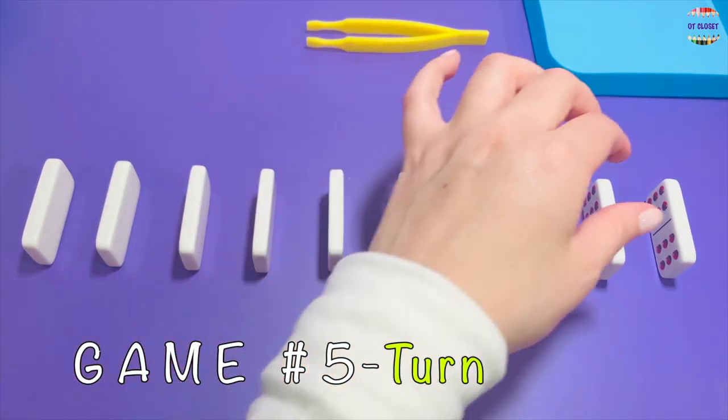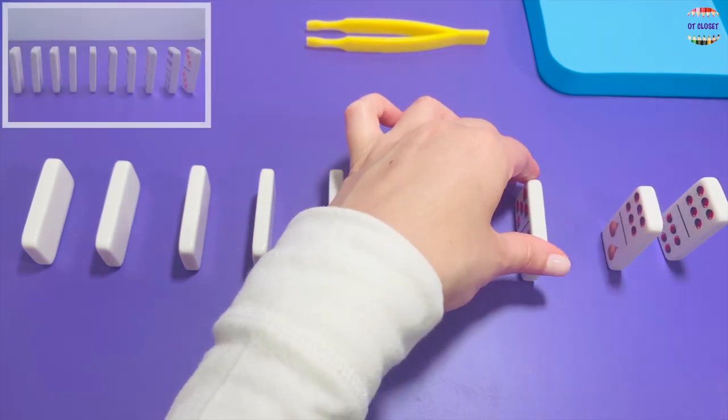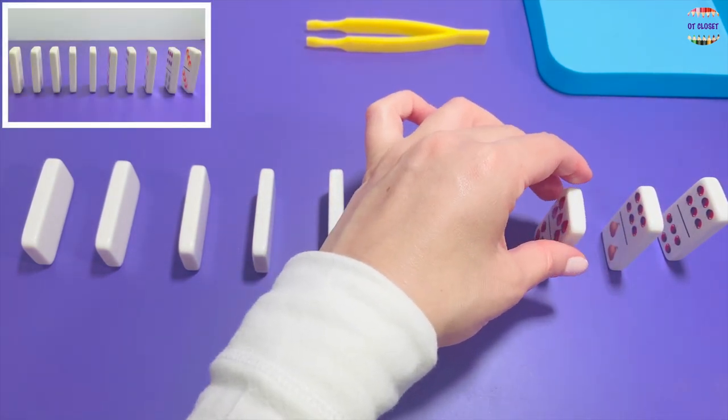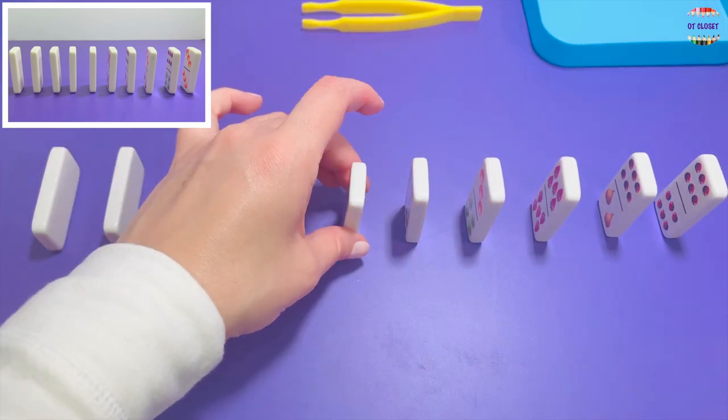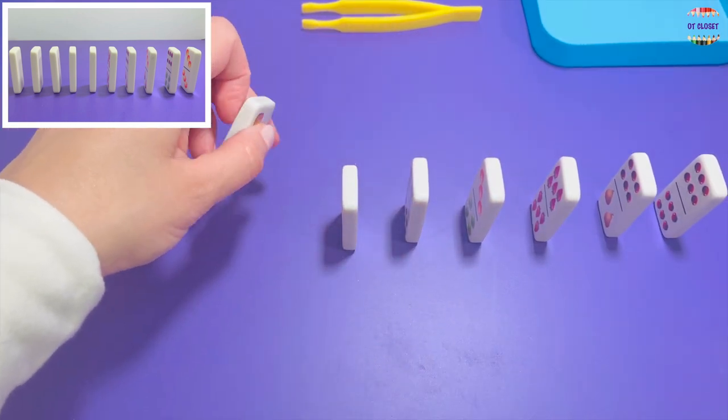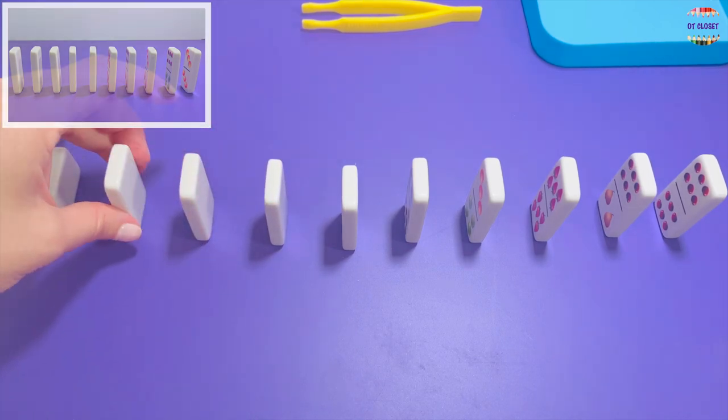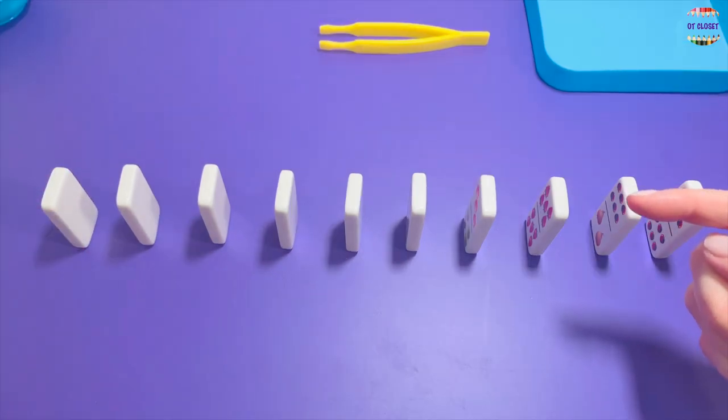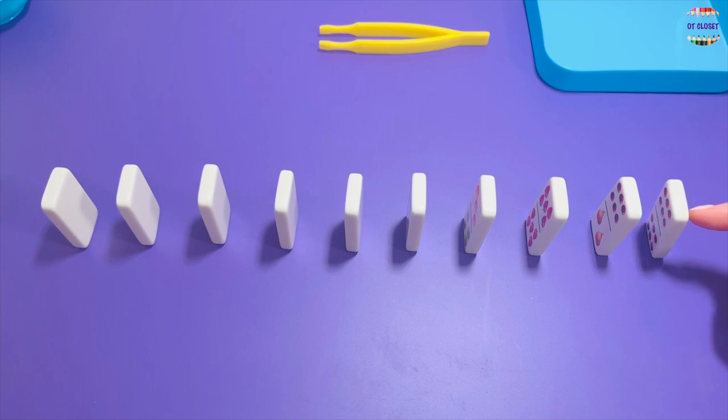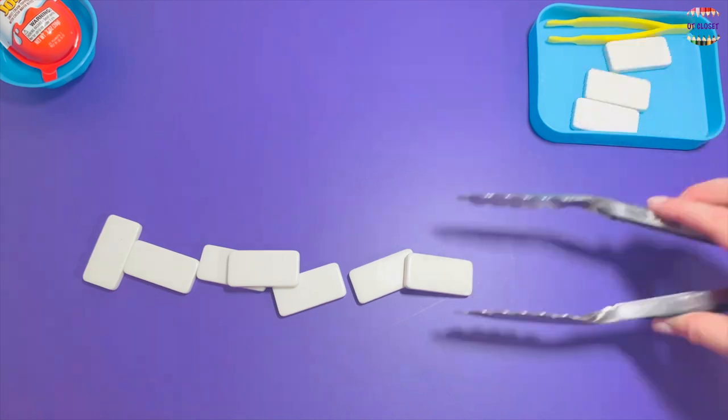Game number five: use your left hand and turn your dominoes to stand. Let's use your index finger, give it a little push and see it fall. Use your tongs to clean them up.